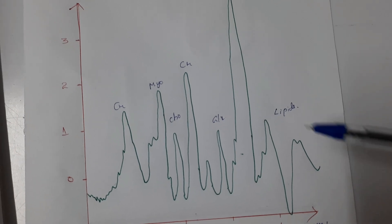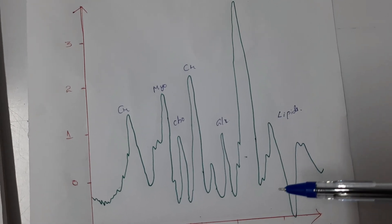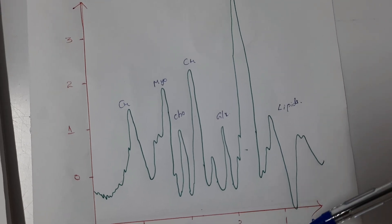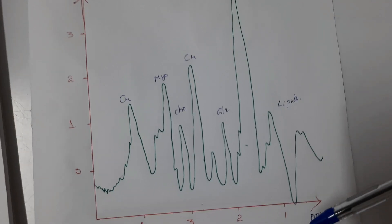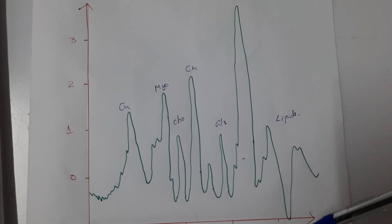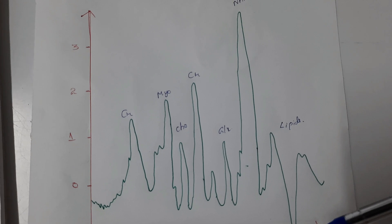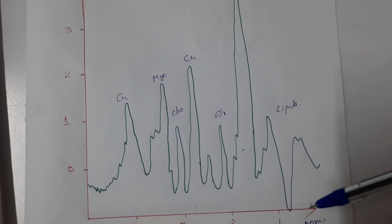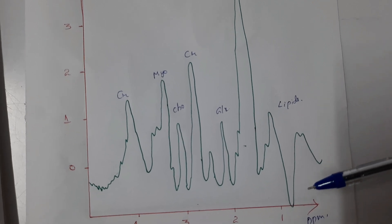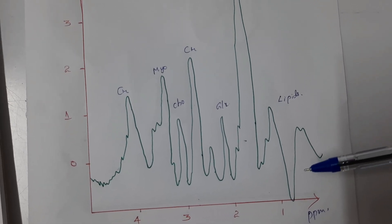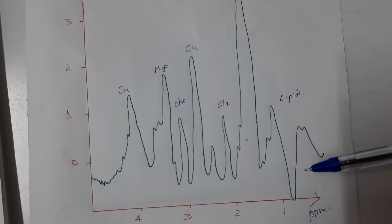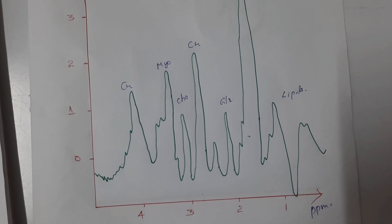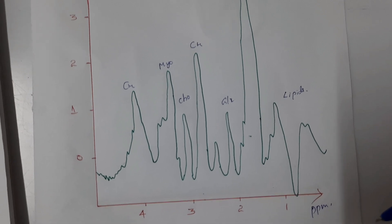The next metabolite is alanine. Alanine is an amino acid component and it is centered at around 1.48 ppm. It is not shown in the graph. Increased concentration of alanine may indicate meningiomas. Meningioma is a primary central nervous system tumor that is visualized in the brain and spinal cord.